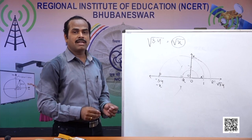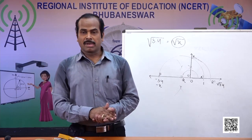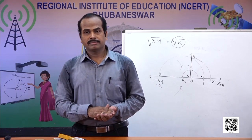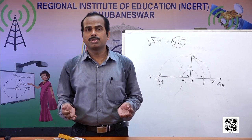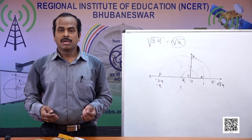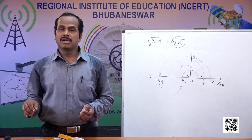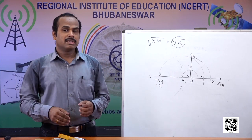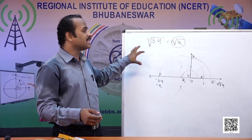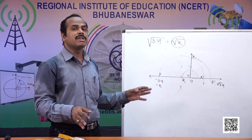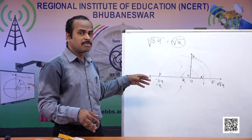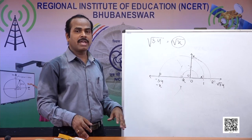So what we learnt today: we learnt how to represent irrational numbers on the number line. We learnt presenting root 2 and root 3 on the number line using the Pythagorean theorem. Then we learnt the successive magnification method to represent non-terminating, non-recurring decimal numbers on the number line. Then using another method, we presented irrational numbers in decimal form on the number line. In the next class, we will discuss the operations of rational numbers.